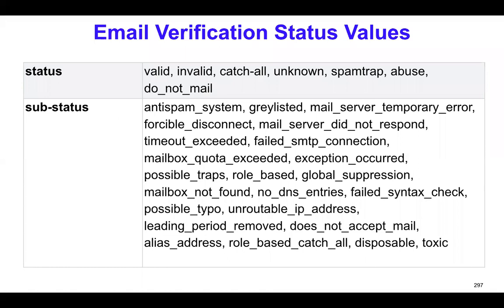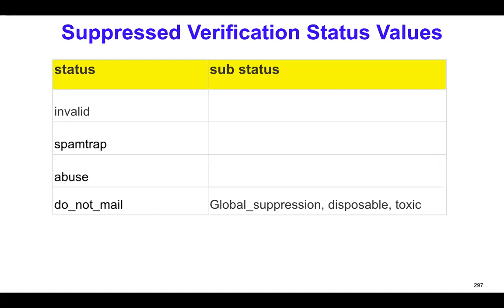Abuse is for people who actually abuse your email, so don't send emails to them. Do-not-email means don't send email to those people for which the status is do-not-email. There are other sub-statuses stored as well. These are the ones that we actually suppress: invalid, spam trap, abuse, do-not-email — and within do-not-email: global, sufficient, disposable, and toxic. Those are the status values we take to make sure we don't send emails to them.